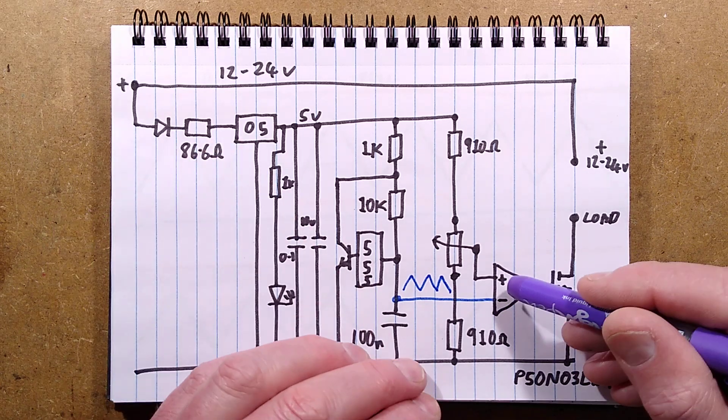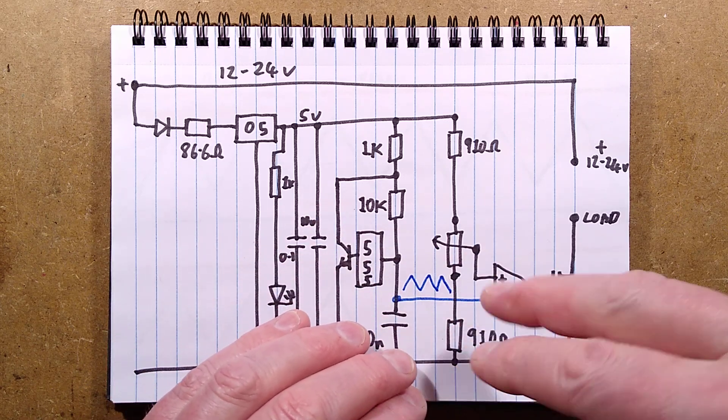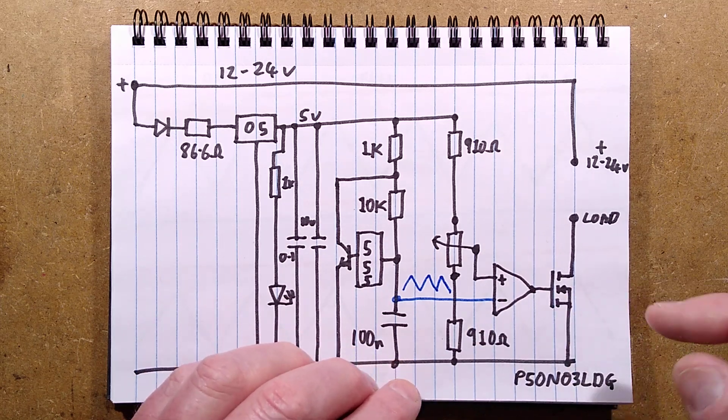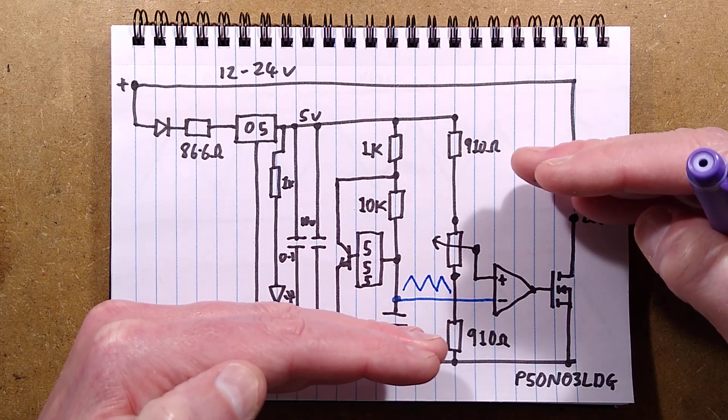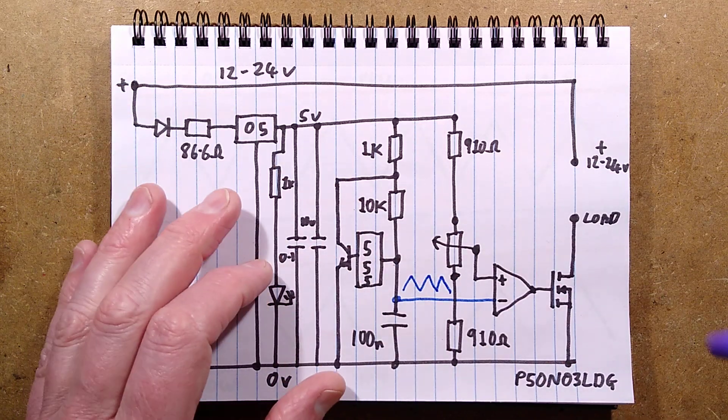That is fed to the input of an op-amp. Now, an op-amp has two inputs. They call it the positive-negative input. That's purely the relationship of the input and the output. An op-amp compares two voltages. If one is higher than the other, the output will go to one state. If it's lower than the other, it will go to the other state.